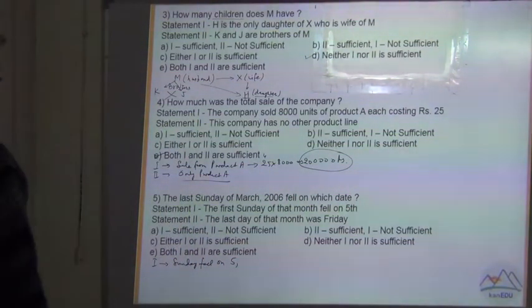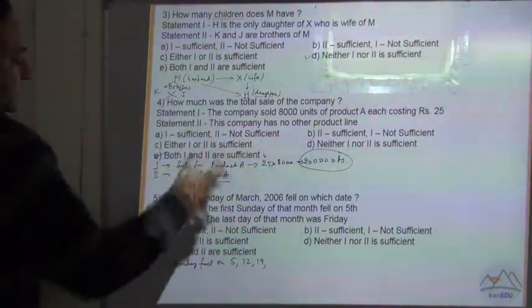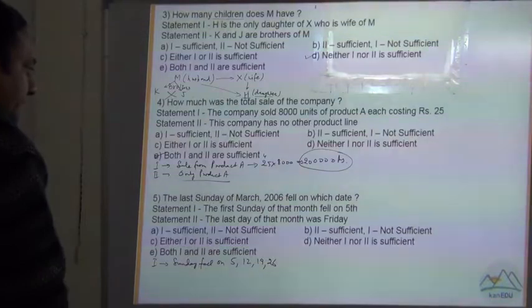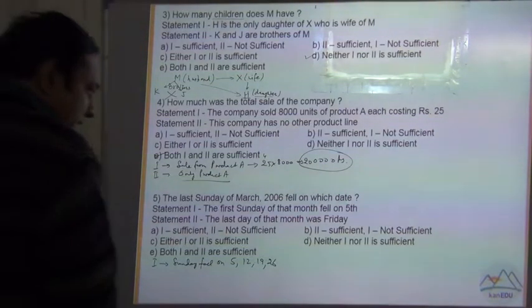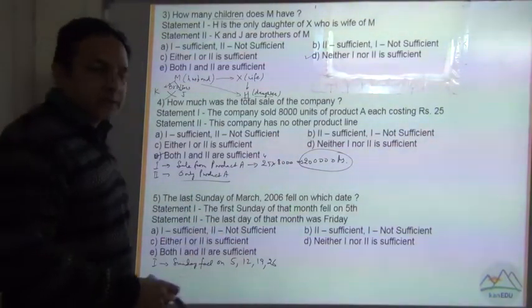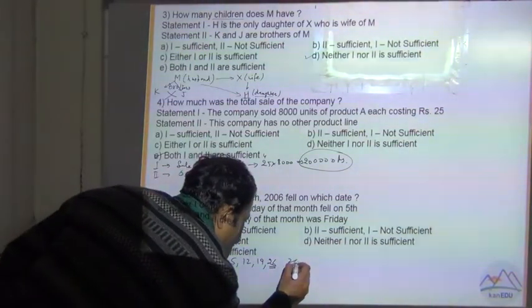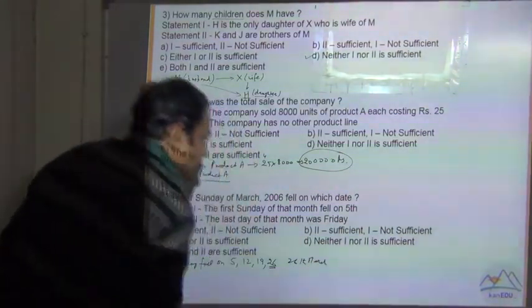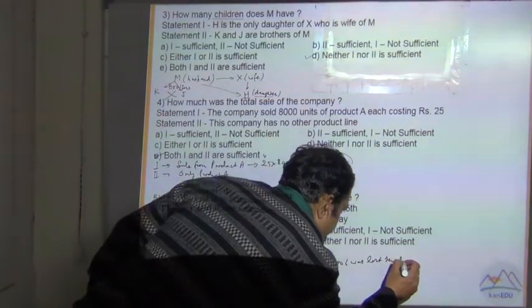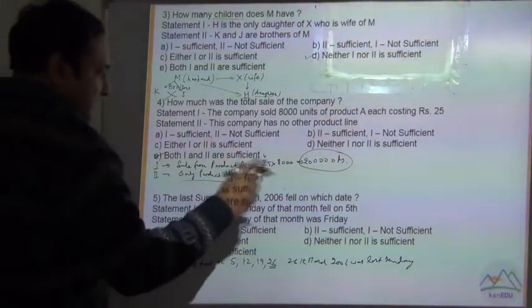After 5th is 5 plus 7 equals 12, 12 plus 7 equals 19, 19 plus 7 equals 26. So 26 is the next Sunday. After 26 plus 7 is 33, which no month has 33 days. So this was the last Sunday. 26th March 2006 was the last Sunday. The first statement is sufficient to give us the answer.